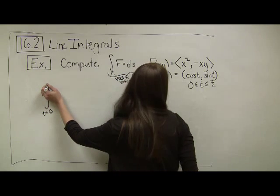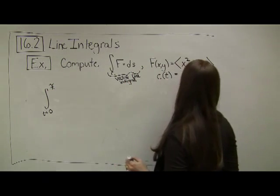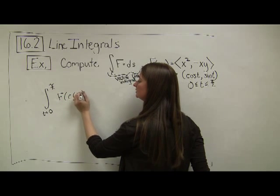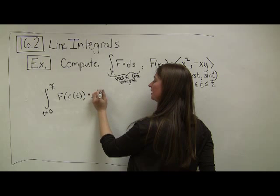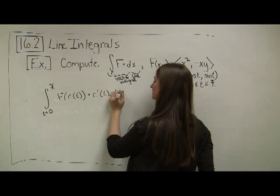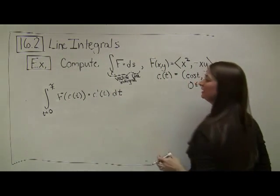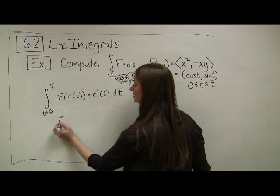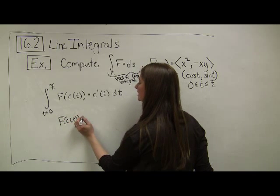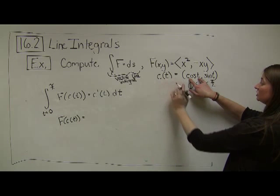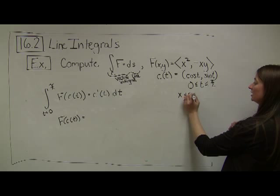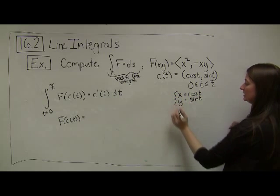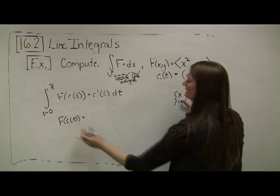Recall the formula: t goes from 0 to pi over 2, and I need to know what f of c of t is, then dot that with c prime of t dt. Once I compute what each of these pieces are, I can do my integration. For f of c of t, I plug in c of t, so my x component equals cosine of t and my y component equals sine of t.